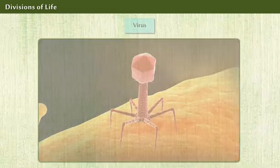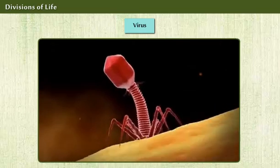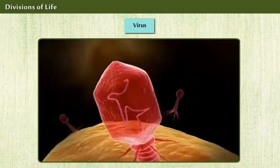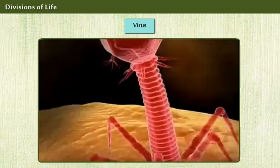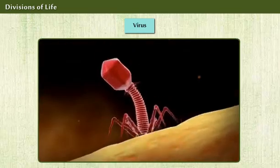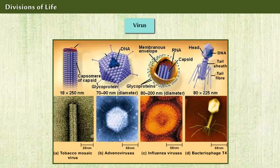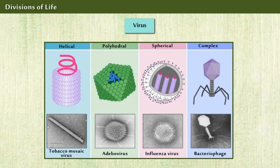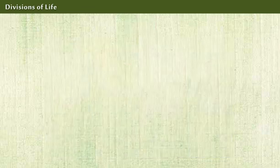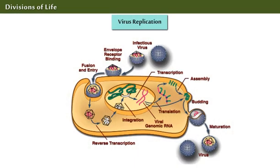Virus is an infectious particle that reproduces by hijacking a host cell, using its machinery to make more progeny. Some of its characteristics are: they have a DNA or RNA genome inside a protein shell called a capsid, and an external membrane envelope. They are very diverse, have different kinds of genomes, and infect different hosts. They reproduce by infecting host cells and reprogramming them to become virus-making factories.